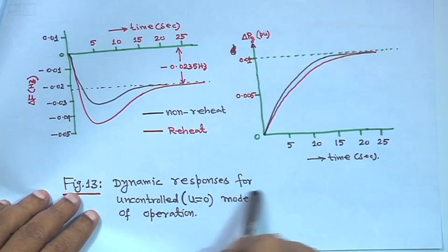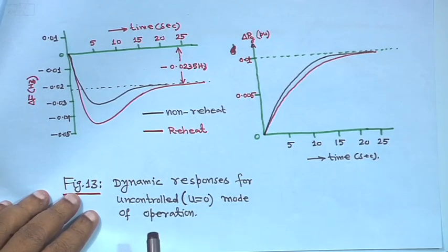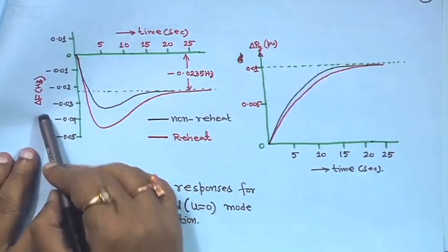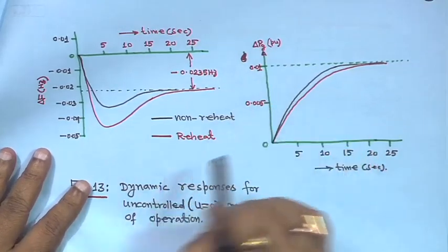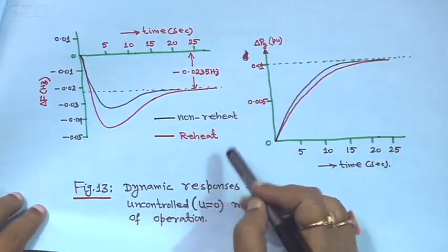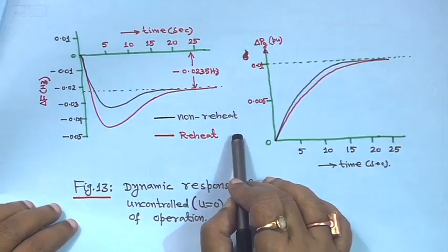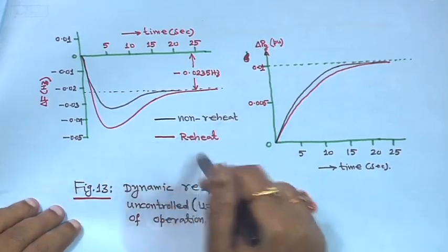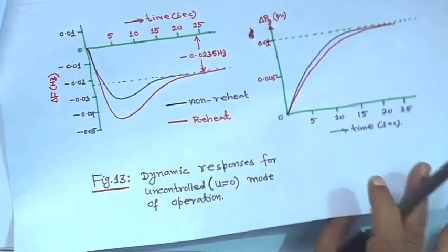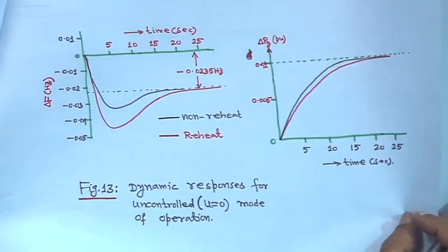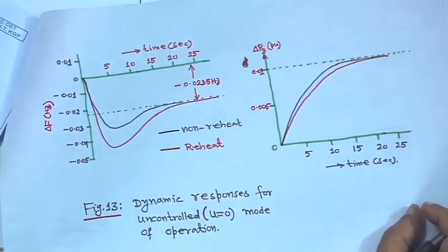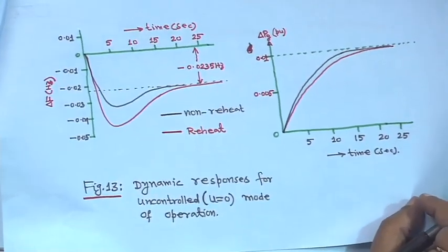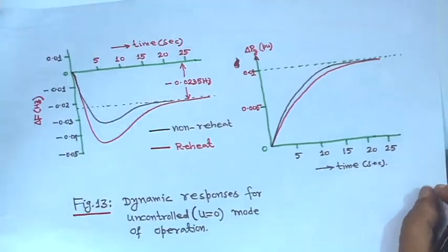This is the uncontrolled mode, where u is equal to 0. This axis is time and this axis is frequency deviation in hertz; this other axis is generator power in per-unit megawatt. You can verify all results in MATLAB Simulink — code can be written very easily for such a system, and you will find all results are identical.